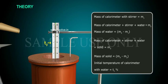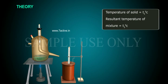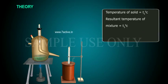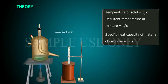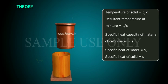Initial temperature of calorimeter with water is equal to T1 degree centigrade. Temperature of solid is equal to T2 degree centigrade. Resultant temperature of mixture is equal to T3 degree centigrade. Specific heat capacity of material of calorimeter is equal to S1. Specific heat of water is equal to S2.